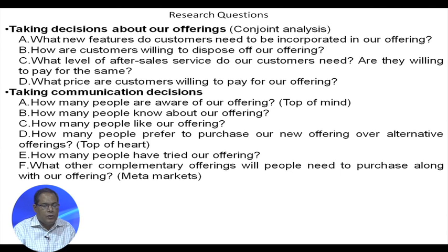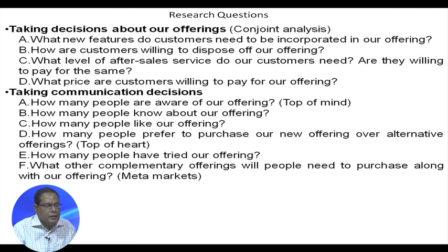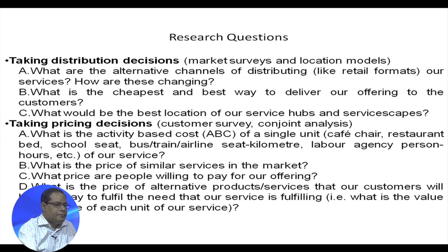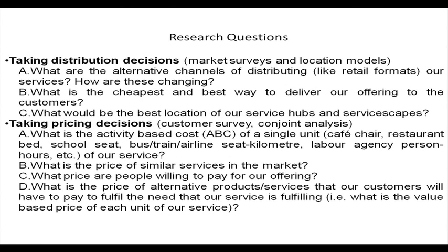For communication decisions: how many people are aware of our offering (top of mind), how many know about it, how many like it, how many prefer it over alternatives (top of heart), how many have tried it, and what complementary offerings will people need to purchase along with it? For distribution decisions, market surveys and location models are used to identify alternative distribution channels, how they are changing, the cheapest and best way to deliver, and the best location for service hubs and servicescapes.